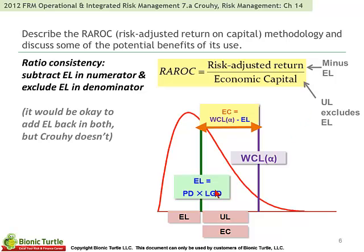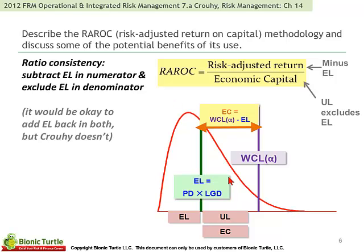A graphic I like to use here illustrates some of these key concepts and summarizes key terminology. Notice this distribution has a positive skew — it's not a normal distribution. That gives us a hint that this is probably not a market risk distribution; it's more likely a credit or operational risk distribution. RAROC is going to be risk-adjusted return divided by economic capital.